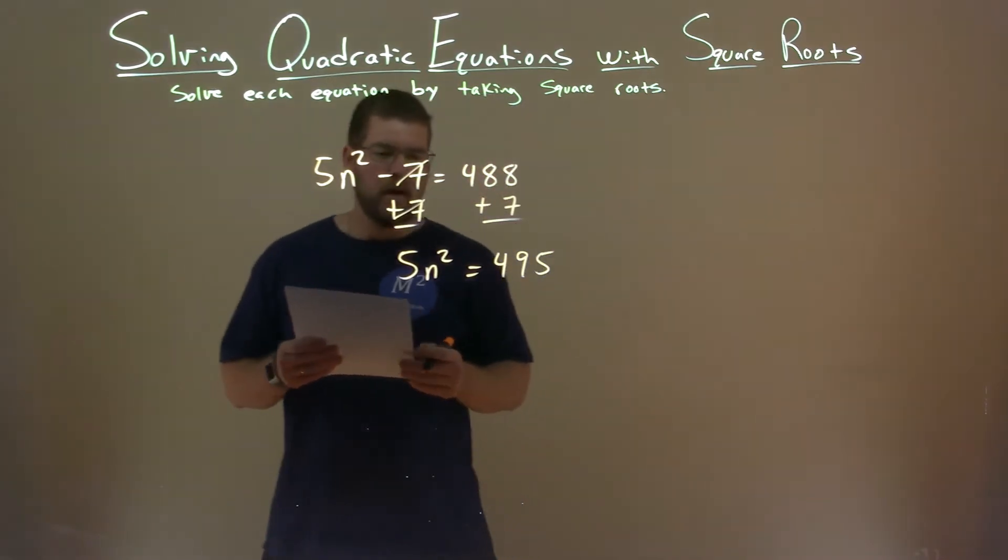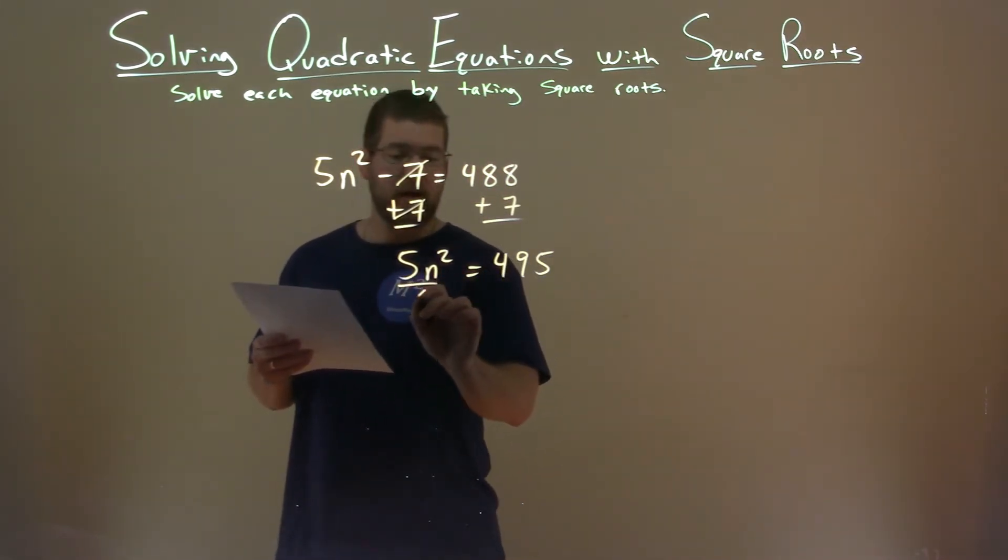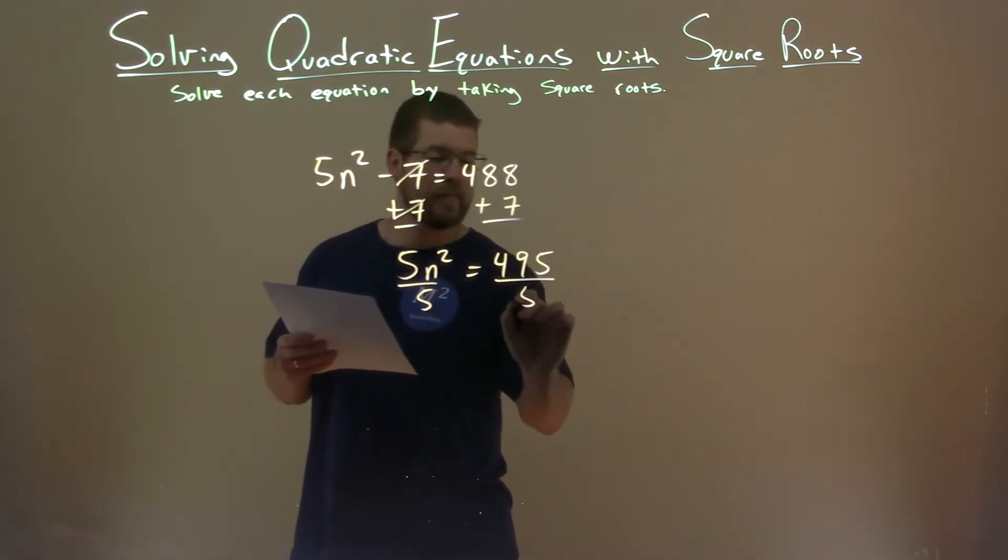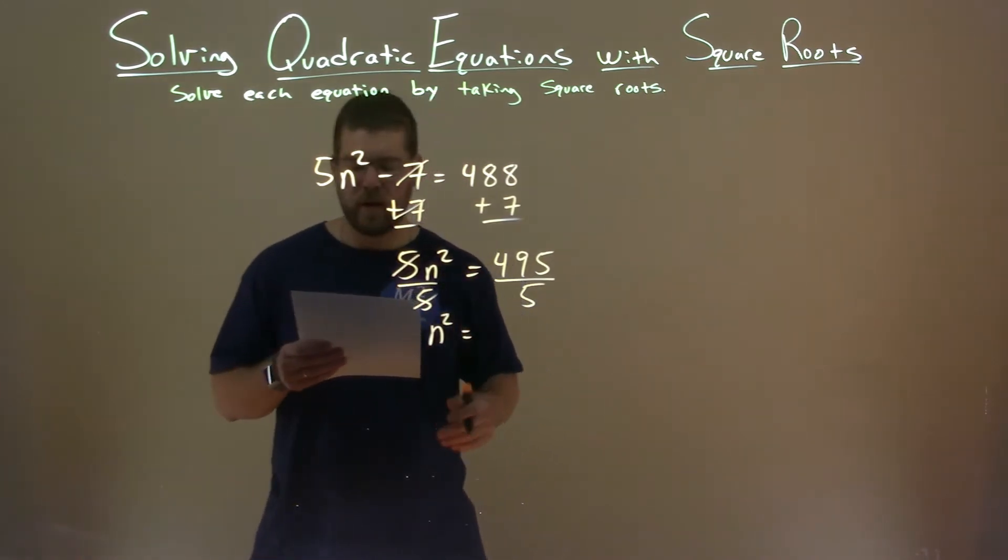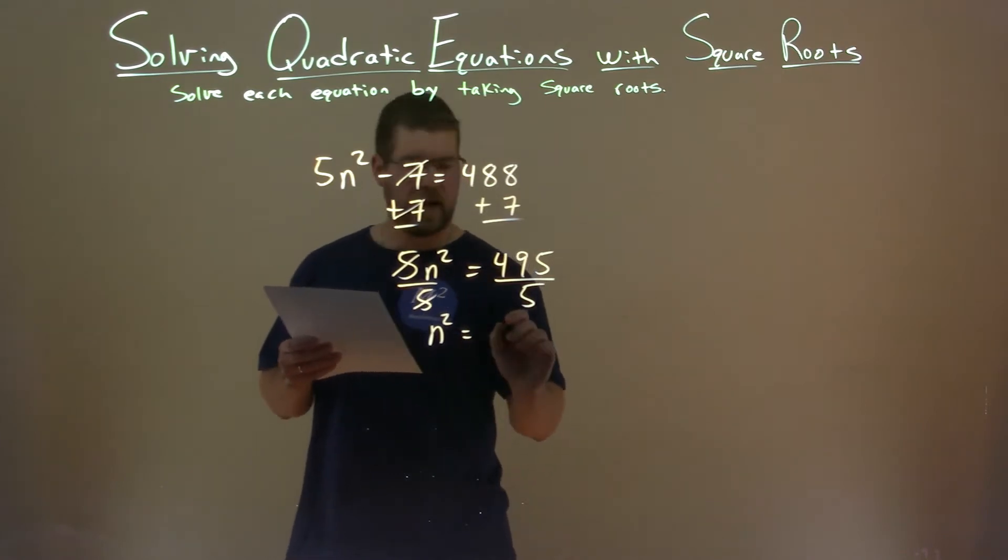Now we want to divide both sides by 5 because it's being multiplied by n. The 5s cancel, and now we have n squared by itself. 495 divided by 5 is 99.